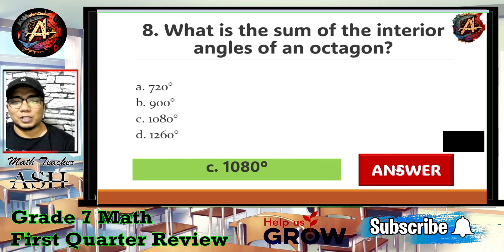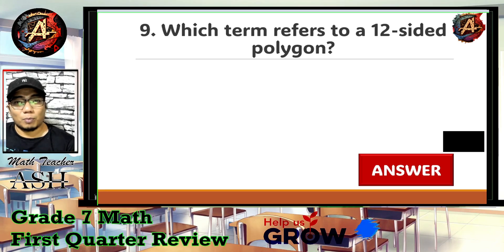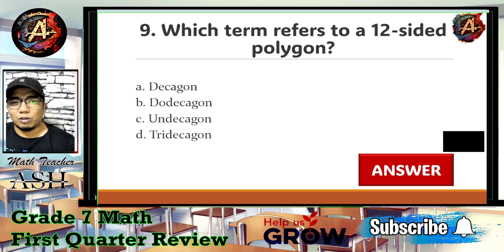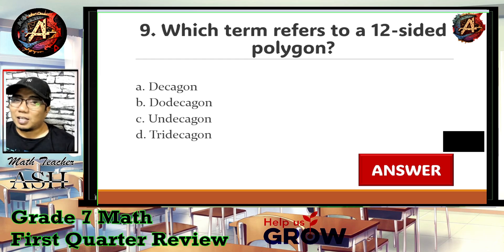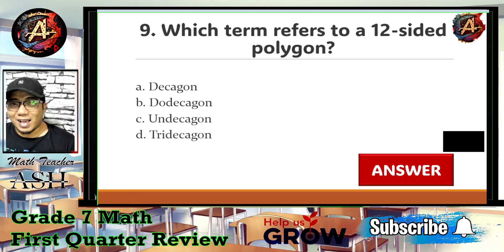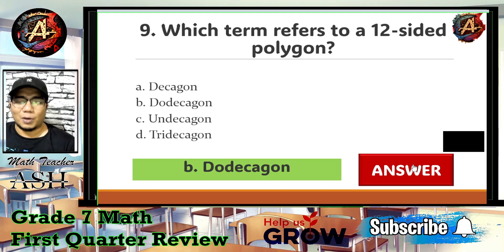Question number nine: which term refers to a 12-sided polygon? Is it A) decagon, B) dodecagon, C) undecagon, or D) tridecagon? This question is about knowledge. A 12-sided polygon is known as the dodecagon — letter B.